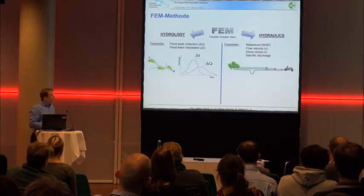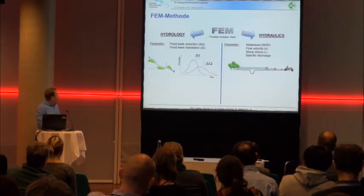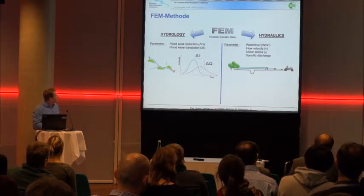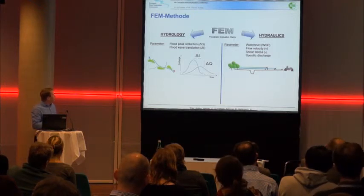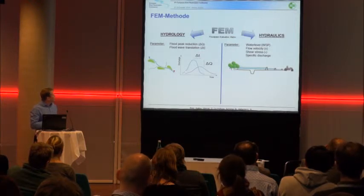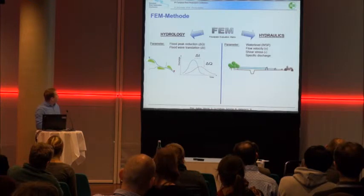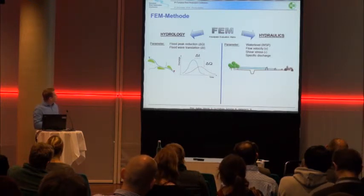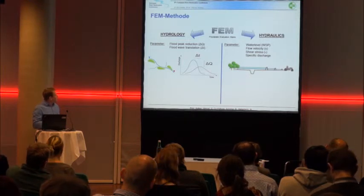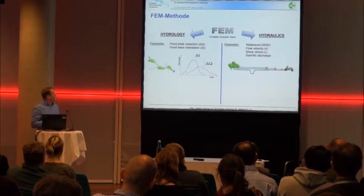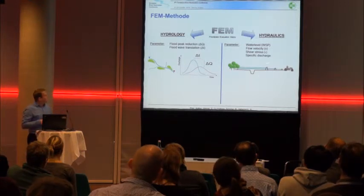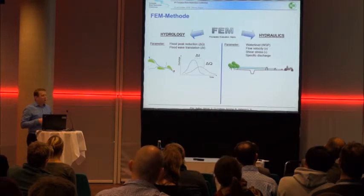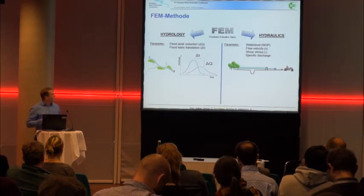Let's go to the method. We have hydrological and hydraulic parameters. The hydrological parameters are flood peak reduction, delta Q, and flood wave translation, delta T - with the inflow wave detected at a certain gauge and the reshaped outflow hydrograph detected downstream. The reshaping takes place when the water flows through and the floodplains are inundated. Looking at the hydraulic parameters - water level, flow width, velocity, shear stress, specific discharge, and flood risk - when we cut off part of the floodplains or the whole floodplain, all these parameters will rise, and this has adverse consequences for certain areas.